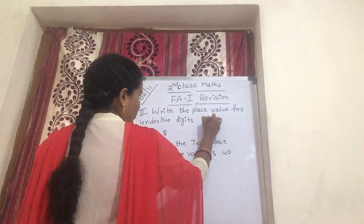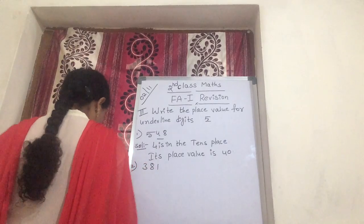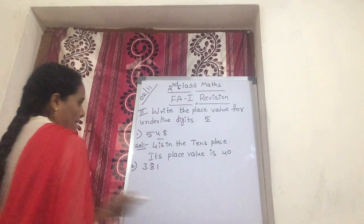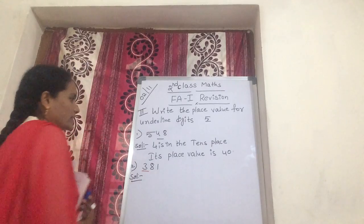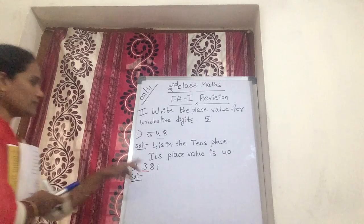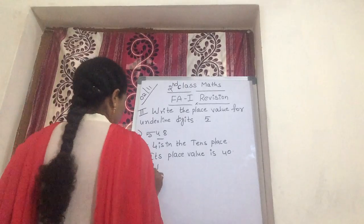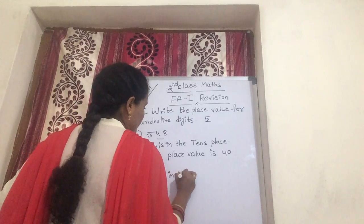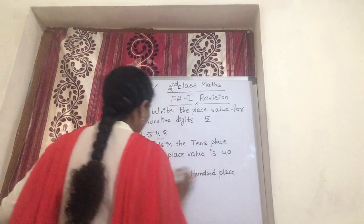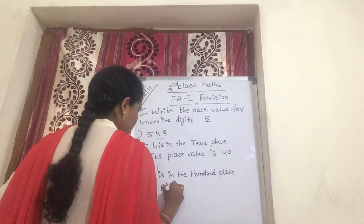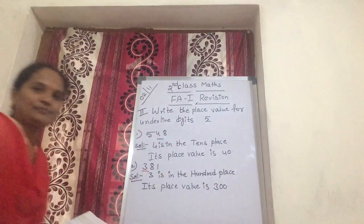Now second question: 391, underline on 3. What is the solution? 3 is in the hundreds place — check it: 1 stands for ones, 3 is in the hundreds place. So its place value is 300.